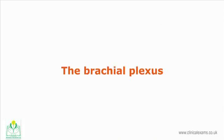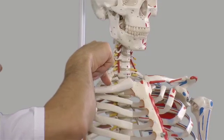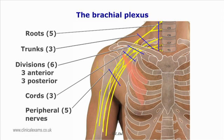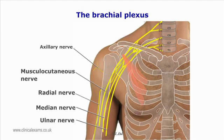The brachial plexus originates from C5 to T1. The trunks can be palpated in the posterior triangle of the neck; however, the lower parts of the plexus are concealed by the subclavian artery. The divisions of the brachial plexus are found posterior to the clavicle and are not palpable. The best area to palpate the brachial plexus is in the supraclavicular fossa at the medial end of the clavicle. Care must be exercised as these cord-like structures can be sensitive. In the upper arm the nerves are difficult to palpate as they are lying deep within the muscles.